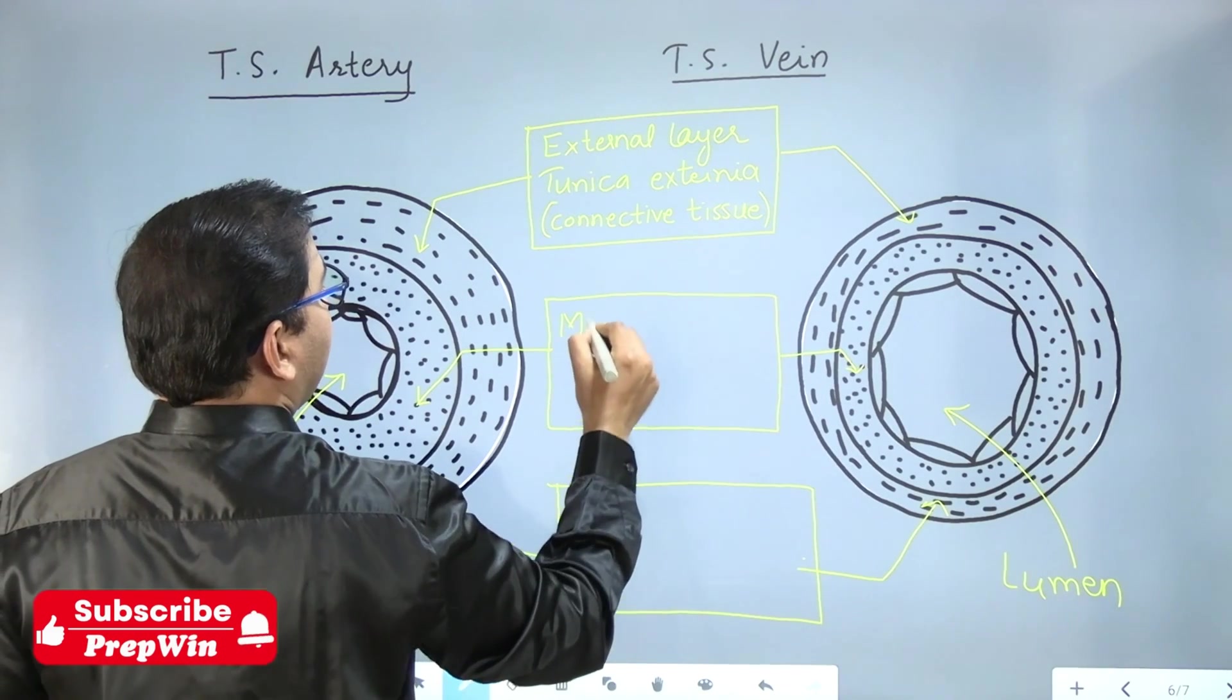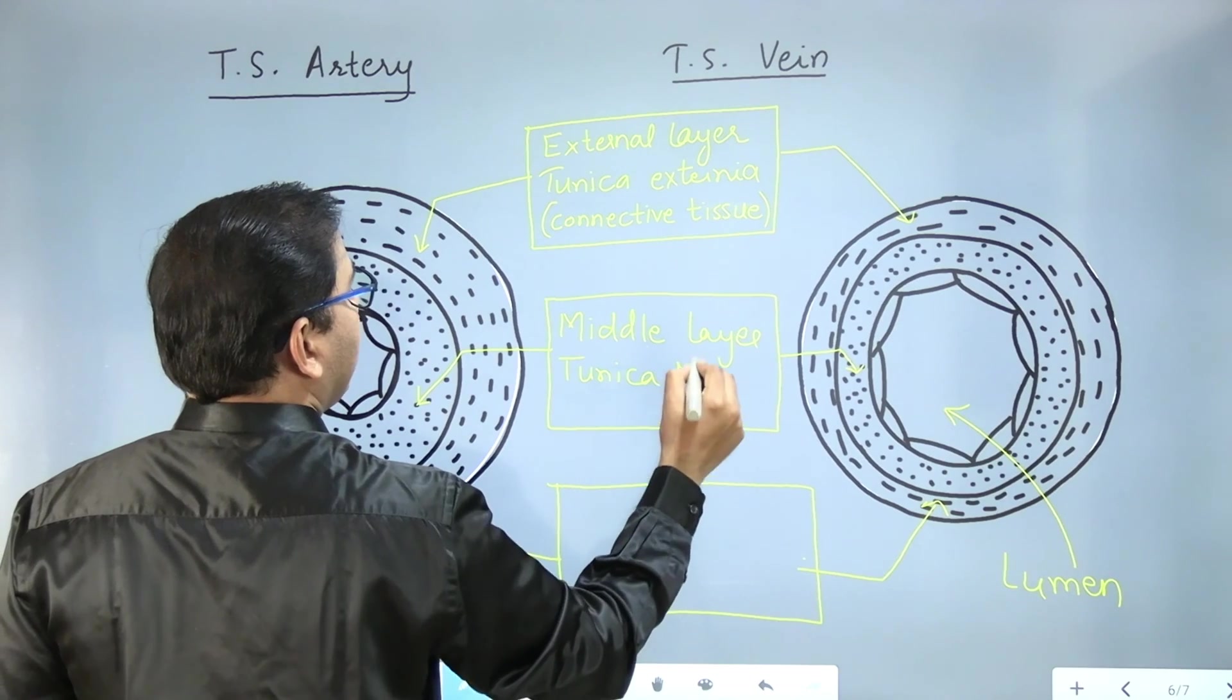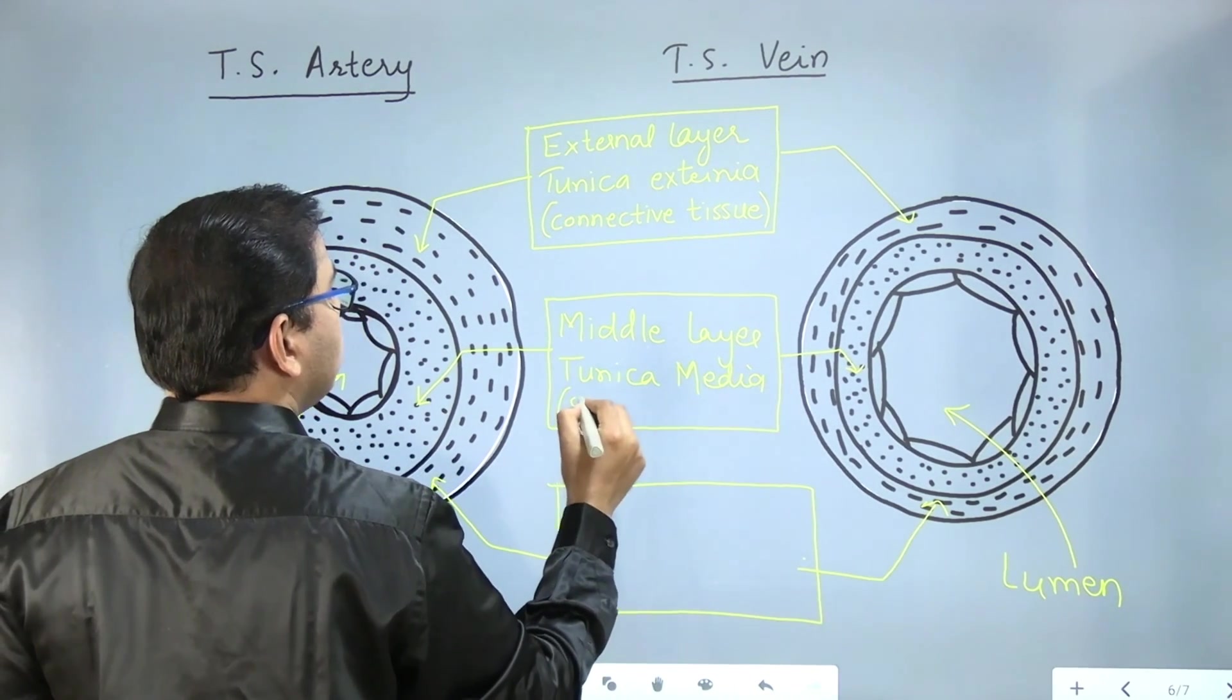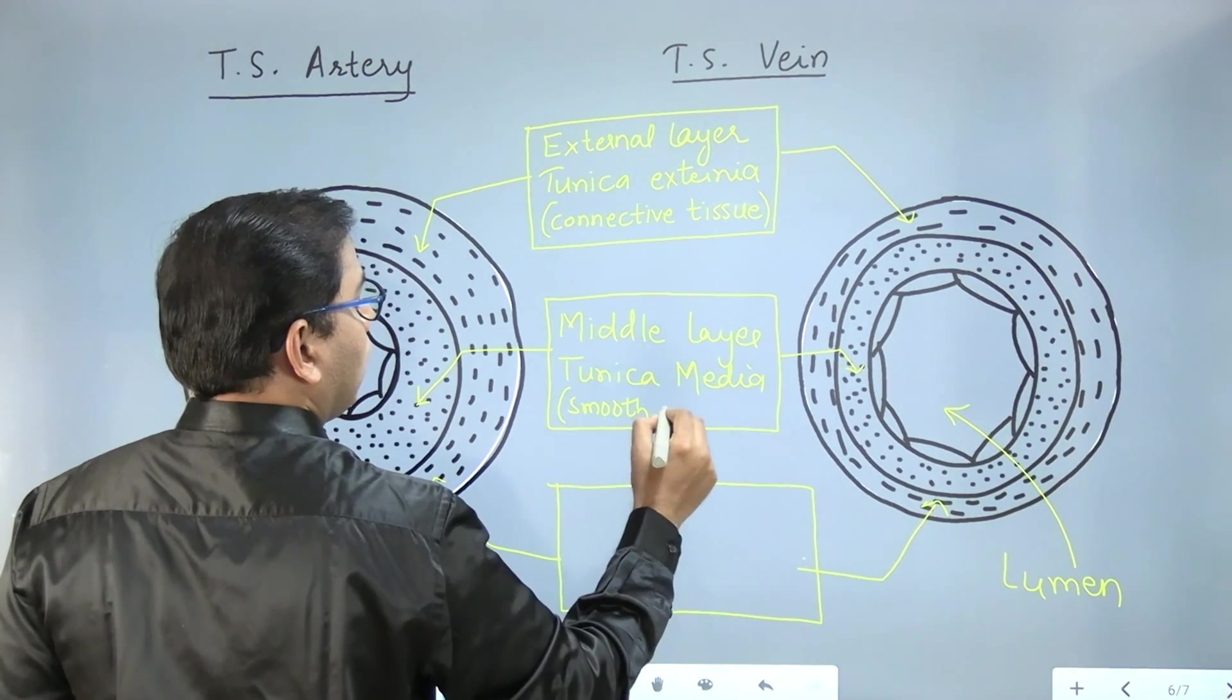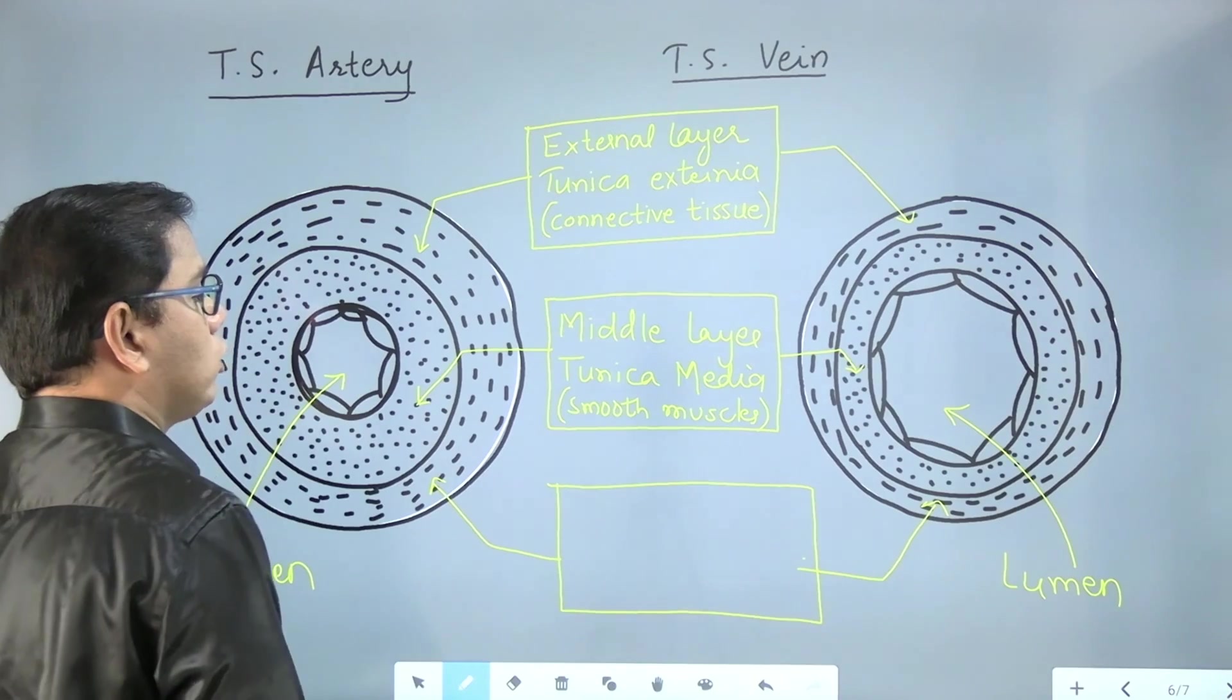Then comes the middle layer. Layer means tunica, and middle means media. It is made up of smooth muscles.